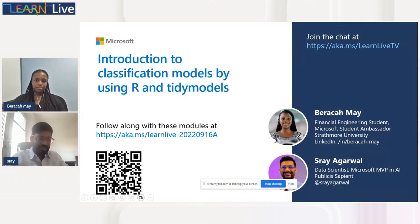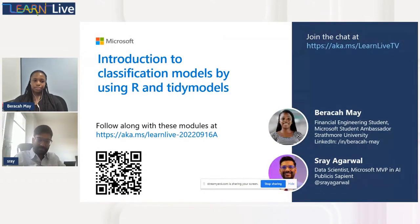I'll introduce myself followed by Baraka and then we'll get started. I'm Shrey Agarwal, having more than a decade of experience in AI and related areas. I'm based out of London and work for consulting firms. I'm also a Microsoft MVP in AI, author of a book called 'Responsibly' published by Springer, an active blogger and speaker, and part of the United Nations as an expert in AI.